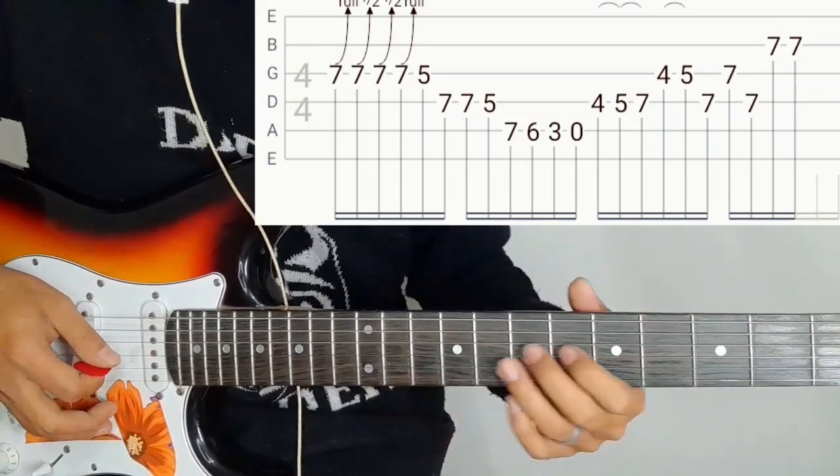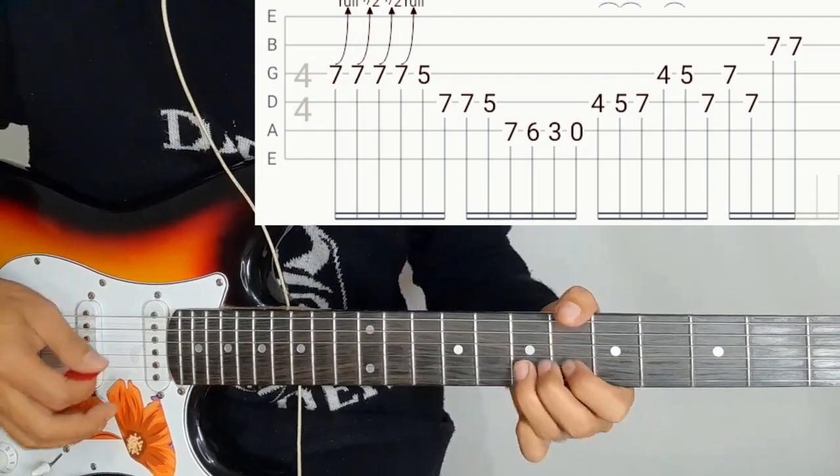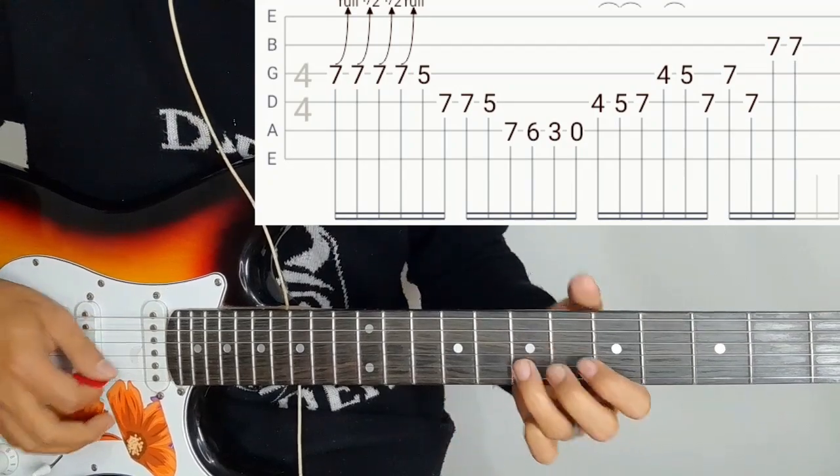So the 5th string, 3rd string 7, 4th string 7, 2nd string 7, 2nd string 7, 3rd string.